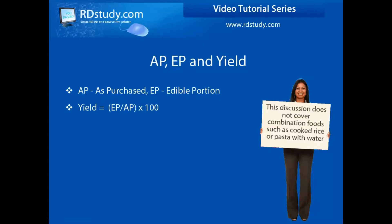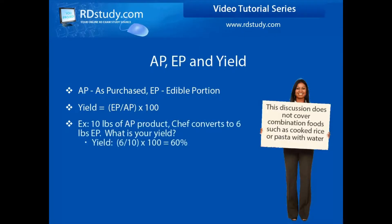As a quick example, say that you have 10 pounds of fresh broccoli received from a delivery by one of your trusted suppliers. Your chef is able to convert that 10 pounds of broccoli into 6 pounds of an edible dish, whether it is part of an entree or maybe a side dish. Your 10 pounds is your as purchased, your 6 pounds is your edible portion, and your yield would be 60%.